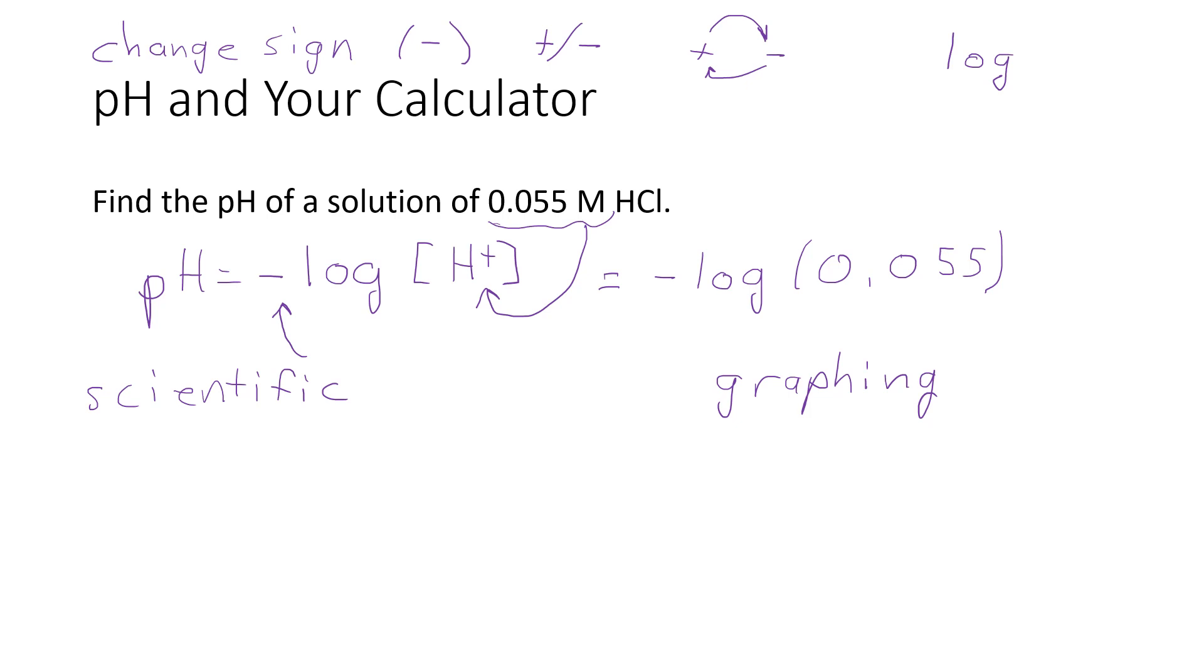So on a scientific calculator, the first thing you would want to do is to type in the 0.055, and once that's showing on your display, hit the log button, and then after that, hit your change sign key, whatever your change sign key looks like. All right, that should give you the right answer. I'm going to run that through on my calculator, 0.055 log and change sign. My calculator is giving me an answer for this of 1.26.